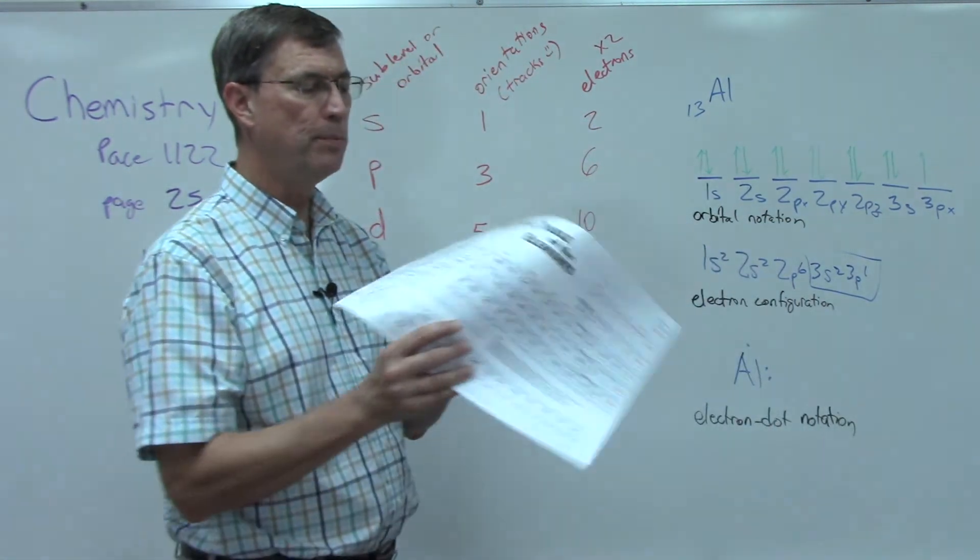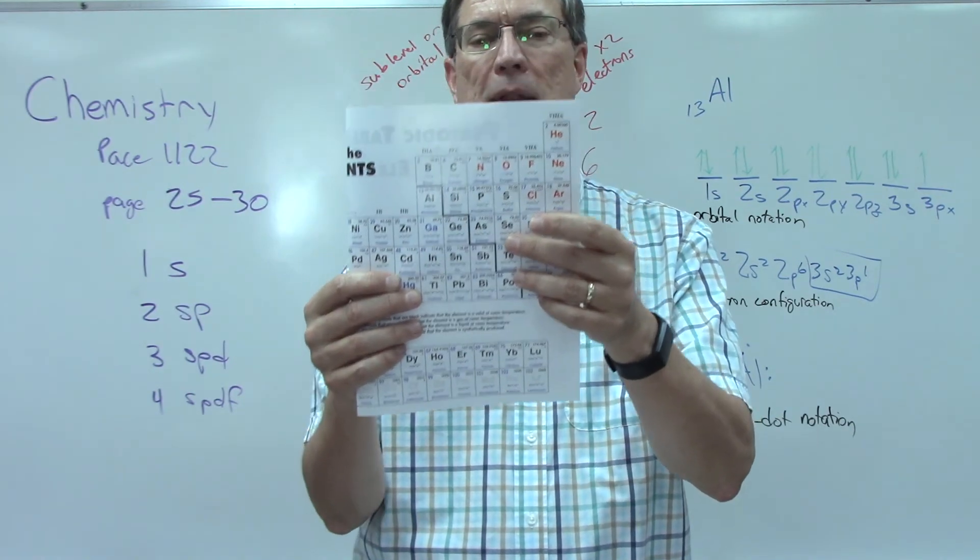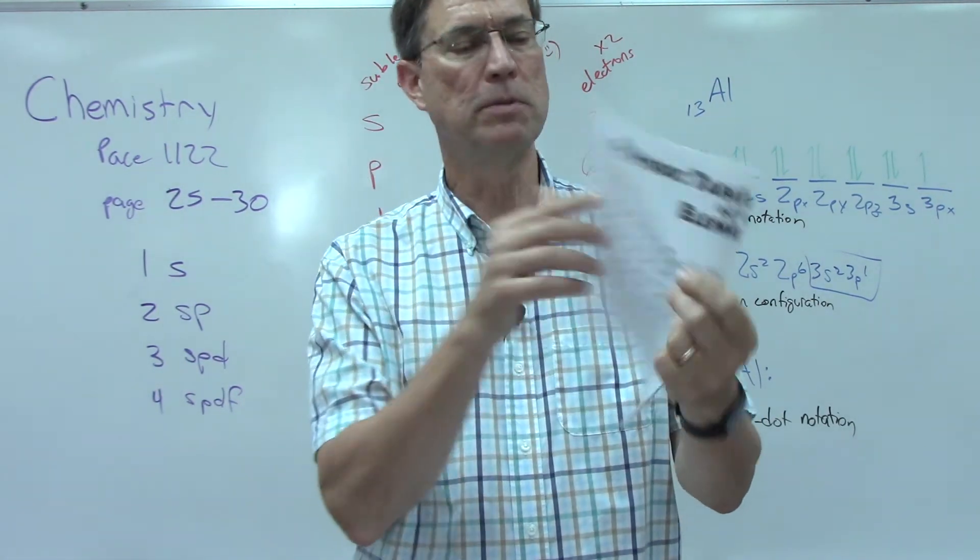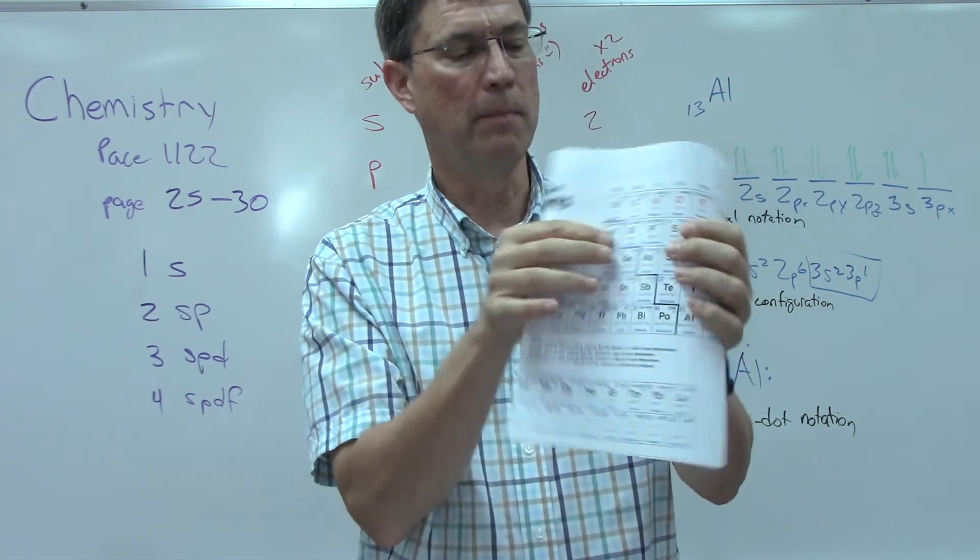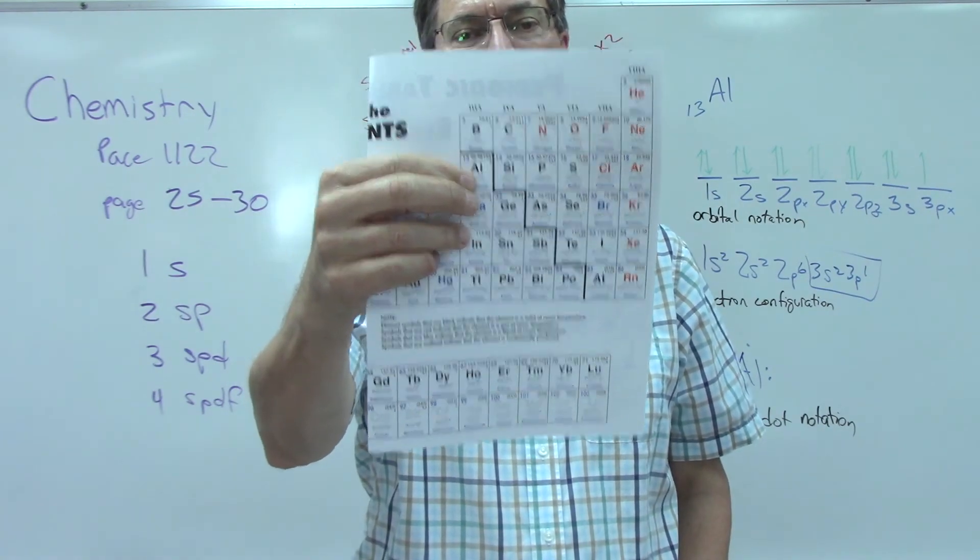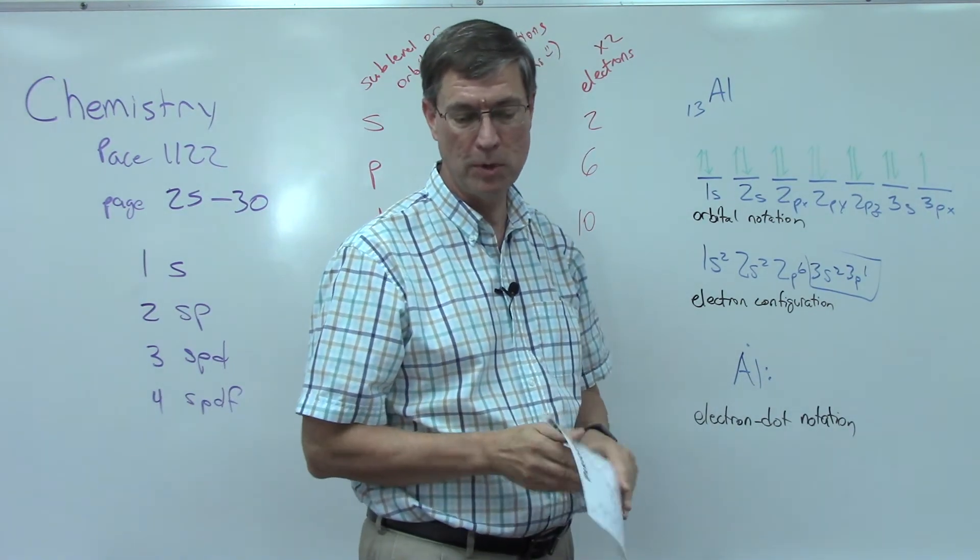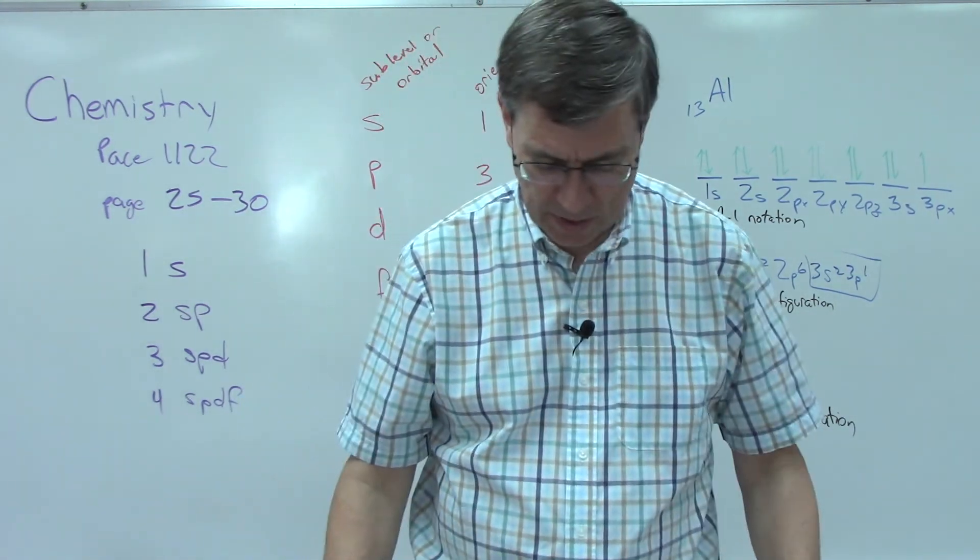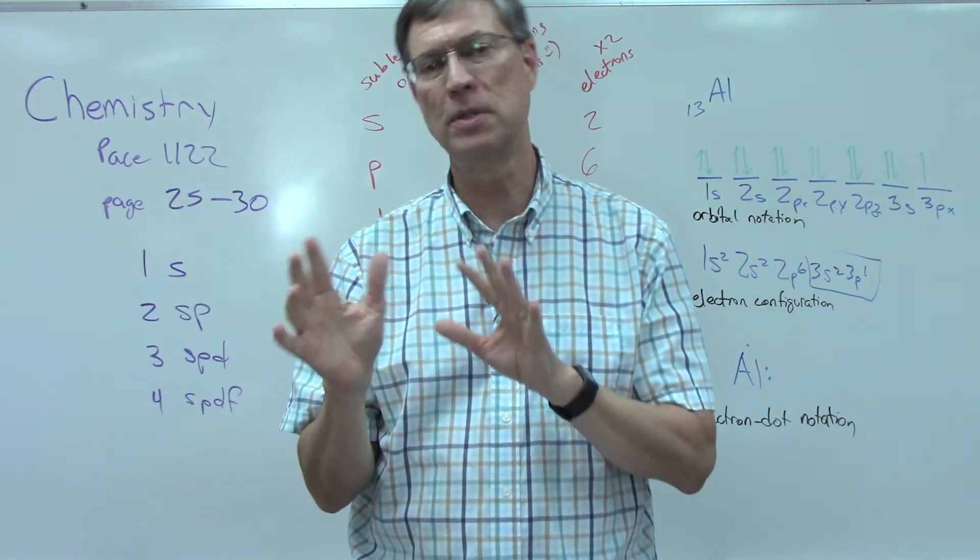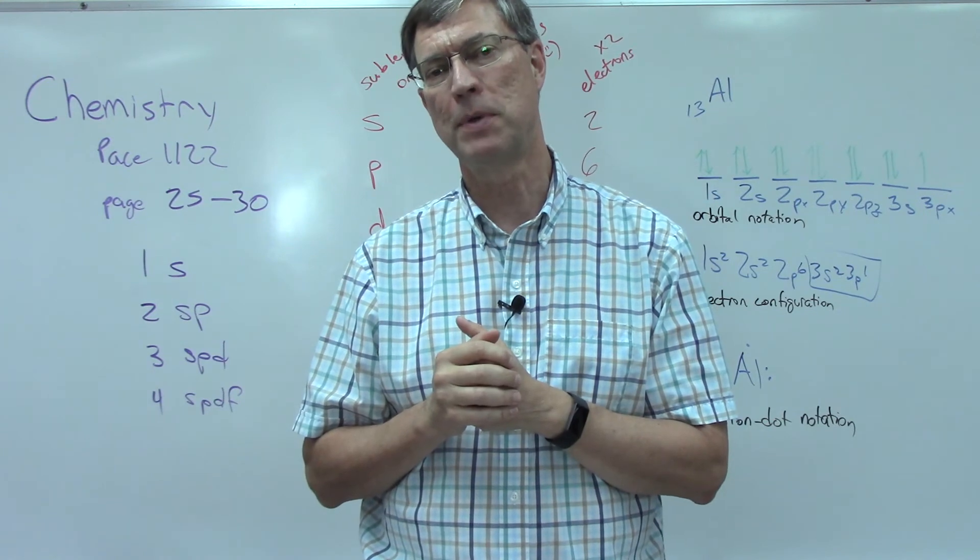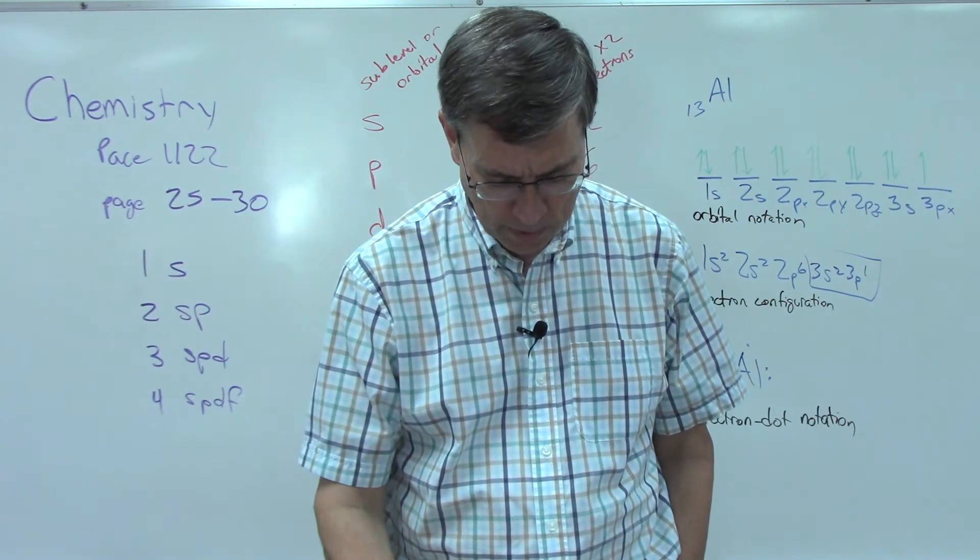Now on your periodic table you will notice that under each element they have a code. Okay, so like here's beryllium, 1s2 2s2. Here's aluminum and there's a code right underneath it that shows you the electron configuration. Okay, so that will help you as you're doing that section. Then it goes on and I'm not going to get into detail here. You need to read it. There's a few questions that you need to be able to answer on the checkup, self-test, pace test.